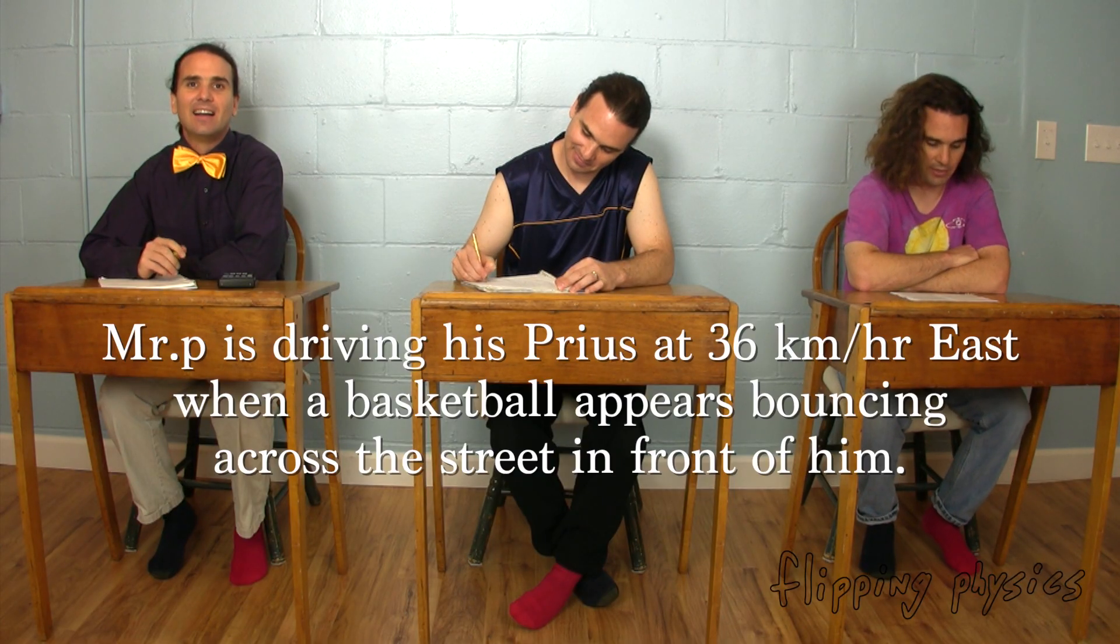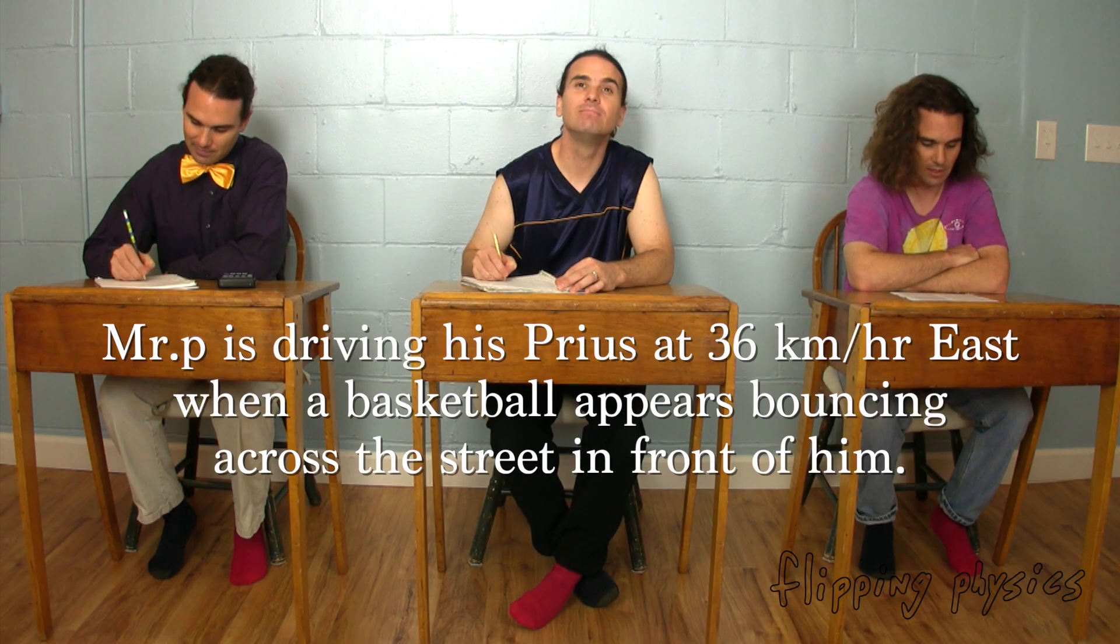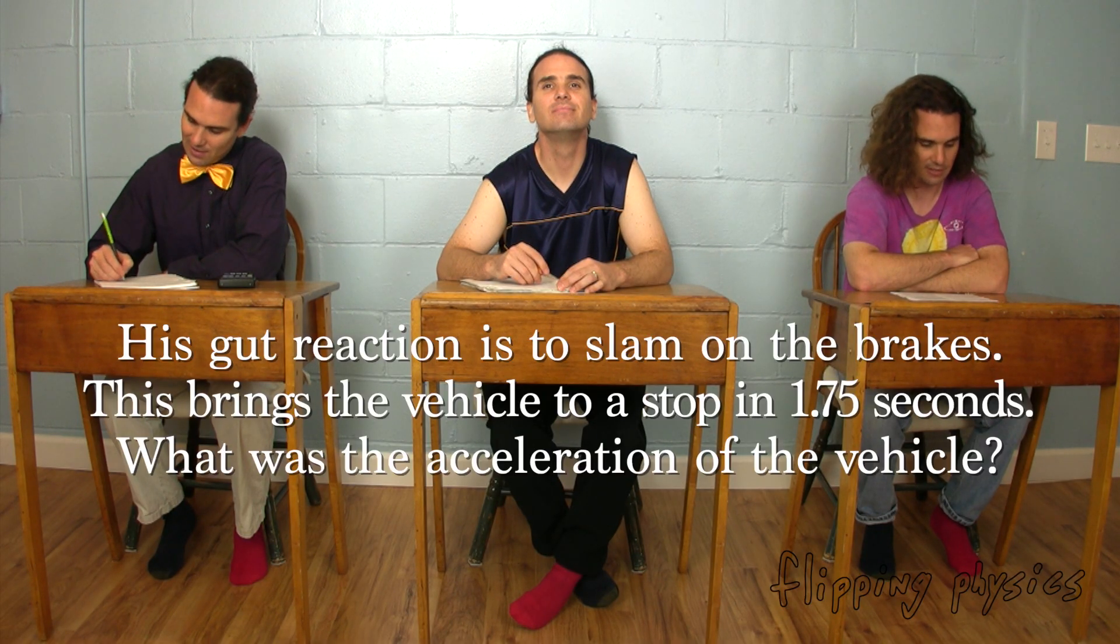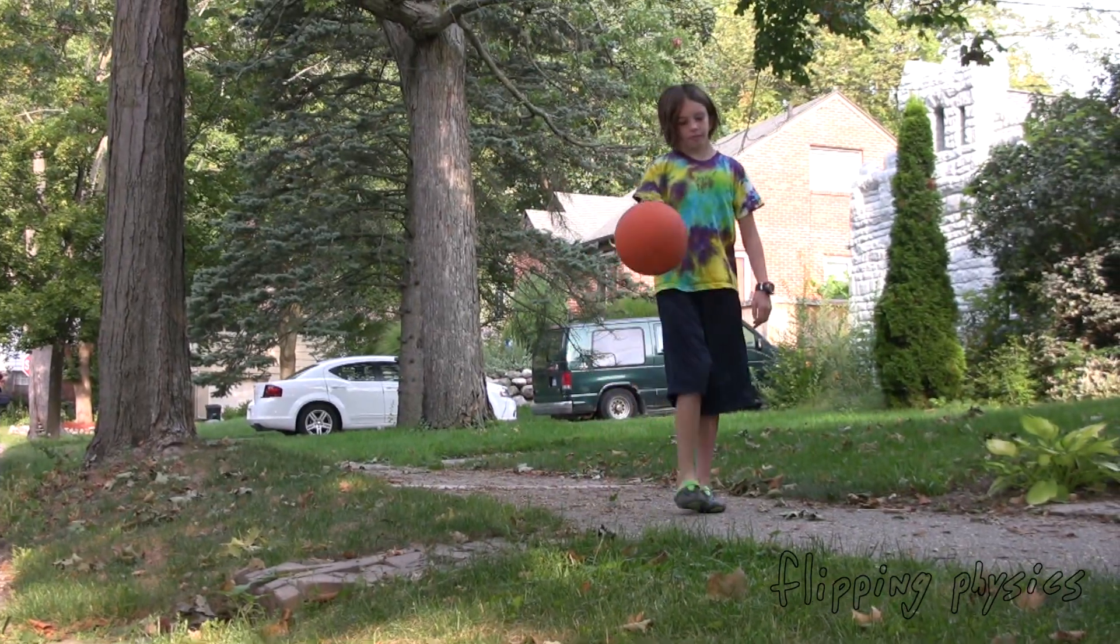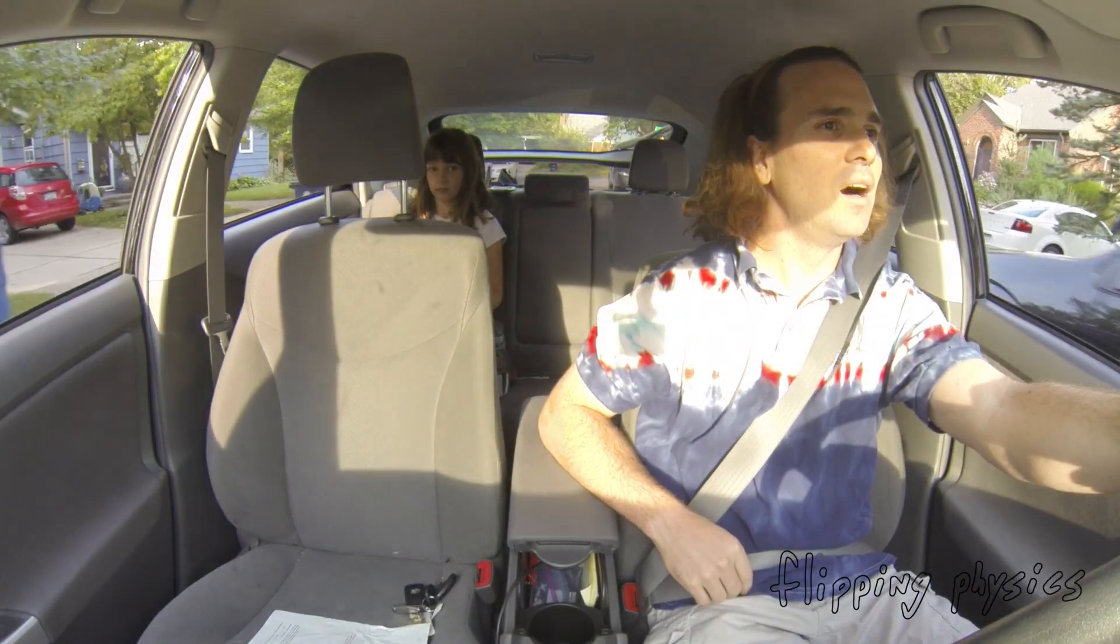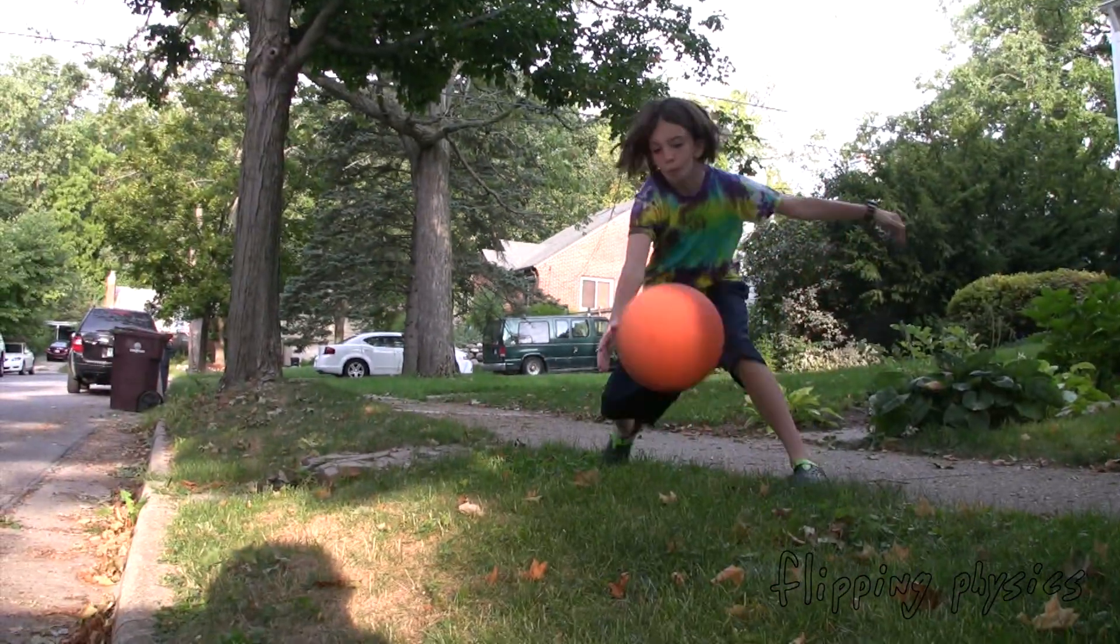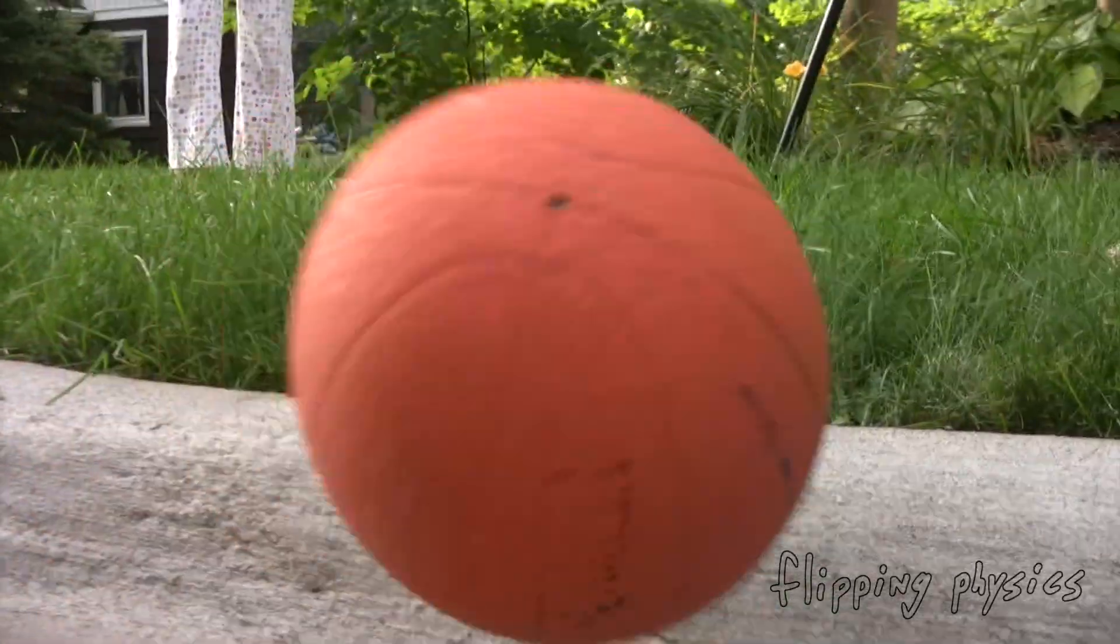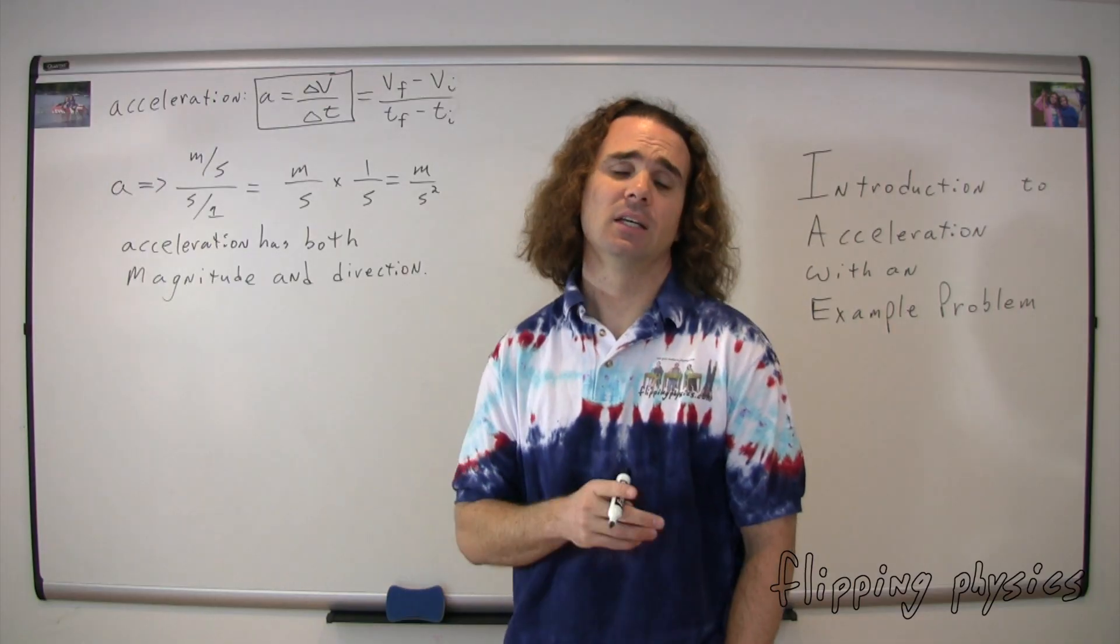Mr. P is driving his Prius at 36 kilometers per hour east when a basketball appears bouncing across the street in front of him. His gut reaction is to slam on the brakes. This brings the vehicle to a stop in 1.75 seconds. What was the acceleration of the vehicle? I lost the ball again. I like that. Yeah.